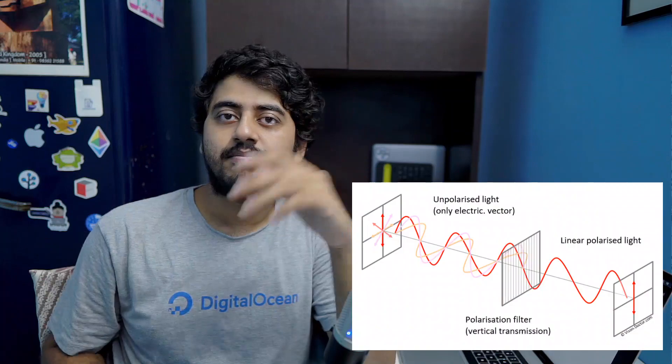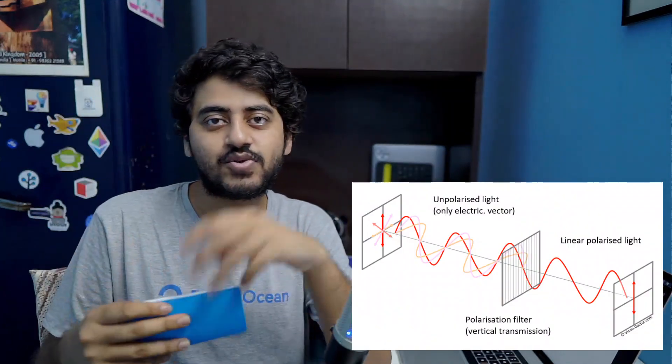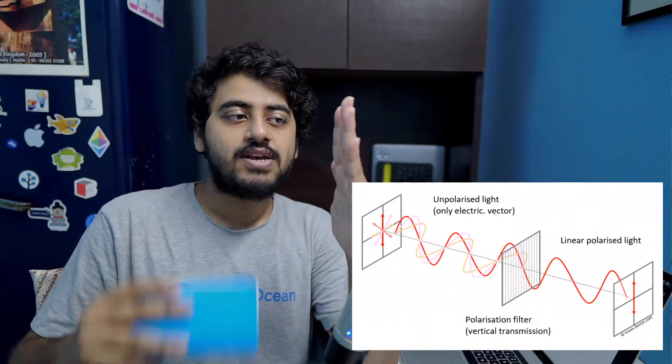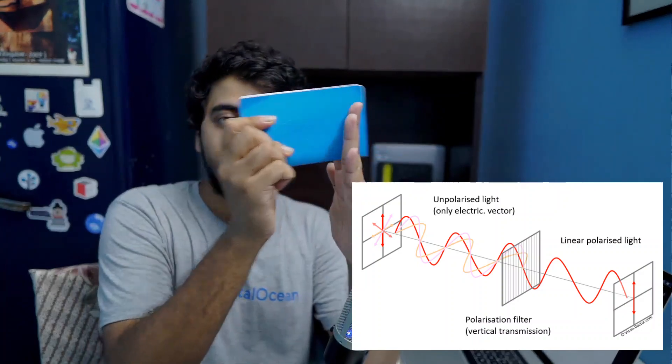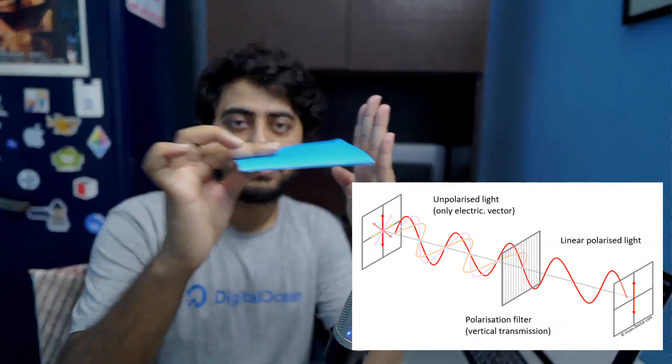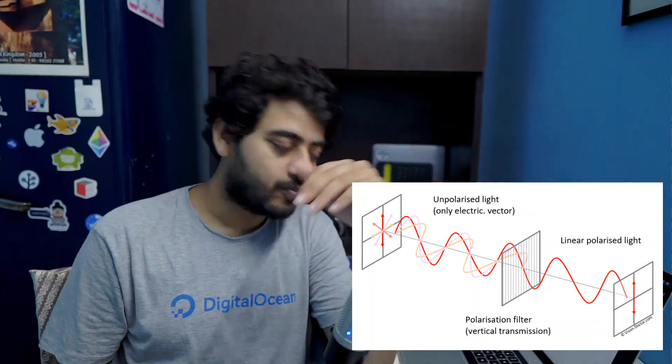What a polarizer is, is a gate — like this. If it's a gate like this, then these kinds of light waves can pass through, but these light waves will get stuck. It's like a grill, like prison bars. That's what a polarizer is. A polarizer oriented like this will only allow certain light waves to pass through and will stop the others.